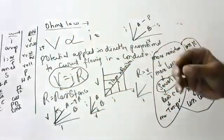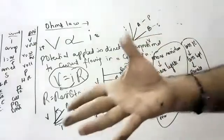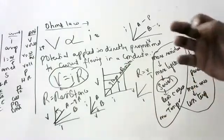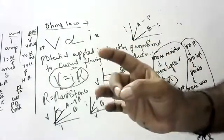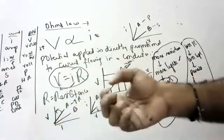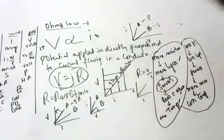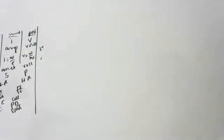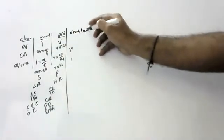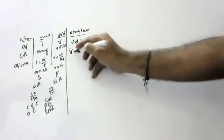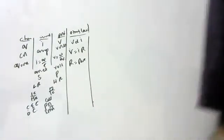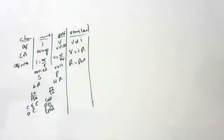Ohm's Law states: the more potential you apply, the more current will flow. V is directly proportional to I, and removing the proportionality gives V = IR, where R is resistance. We will now solve three or four numerical problems on this.